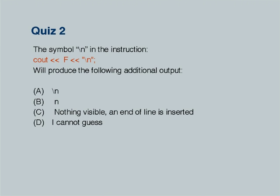Another quiz: the symbol backslash-N in the instruction `cout << f++ << '\n'` will produce what additional output? The right answer is 'nothing visible, and end of line is inserted — I cannot guess otherwise.' Through this quiz I immediately found that about 135 students in my course had already done programming — extremely important feedback intuitively available. The counting is not done by me explicitly but by my TAs counting raised hands. I would like to count that automatically, which brings me to the gadget we have designed.